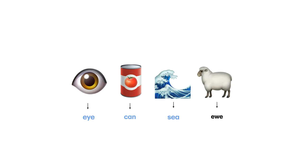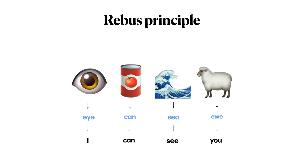So, we have an eye, a can, a wave representing a sea, and a sheep representing a ewe. Eye, the body part, sounds like 'I', the pronoun. Can, the noun representing the object, sounds like the English verb 'can'. Sea, meaning a body of water, sounds like the English verb 'to see', as in to visualize, to visually recognize something. And finally, you, the word for a female sheep, sounds like the English pronoun 'you'. Thus, using the Rebus principle, we can decode the message: I can see you.